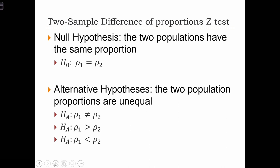If we're dealing with the two-sample difference of proportions, everything basically follows from the same two-sample difference of means tests. So we have the null hypothesis that the two proportions are equal, and then we have the three alternative specifications, not equal, 1 greater than 2, or 1 less than 2.